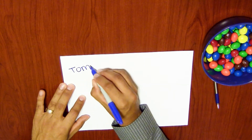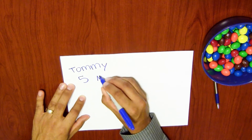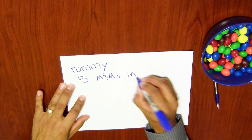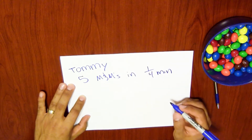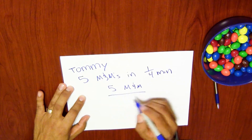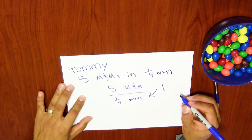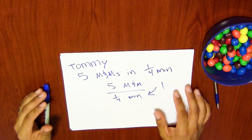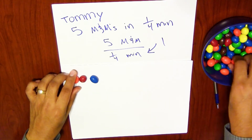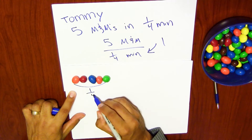If I let you know that Tommy can eat 5 M&Ms, and he can do this in a fourth of a minute, you could say that the rate is 5 M&Ms per fourth of a minute. But what we need to do is make this into a 1 with conversions. One way I can do this is by using the M&Ms. We'll leave this here. Using the M&Ms, we can actually put down 5 M&Ms, and this will represent my fourth of a minute.